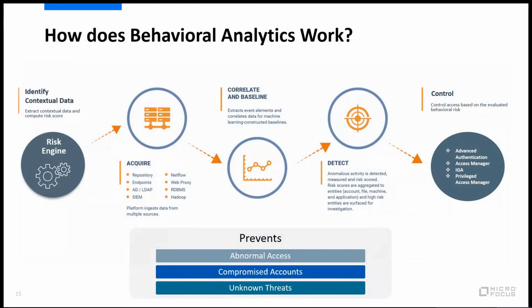So how does this really work? We identify the contextual data by plugging into all the different systems in your environment — whether it's repositories, endpoints, a SIEM solution, or a data lake — ingesting data and information from all the applications in your environment. When we do that, we correlate and establish a baseline for individual users. When a user's activity looks malicious or riskier, we detect that, and then we plug into our downstream IAM solutions like multi-factor authentication, Access Manager, or IGA for kicking off an access review.